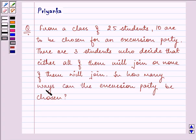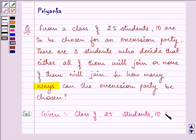In how many ways can the excursion party be chosen? So here we need to find in how many ways the excursion party can be chosen. We are given a class of 25 students and 10 are to be chosen.